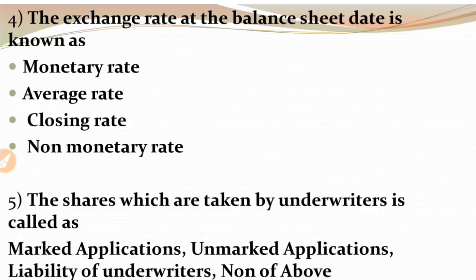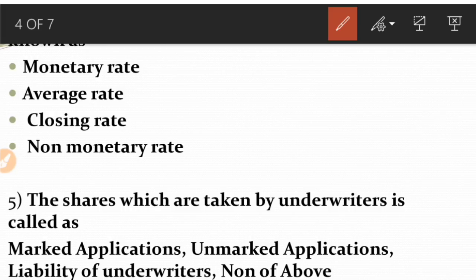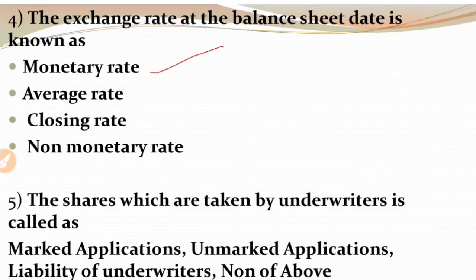MCQ 4: The exchange rate at the balance sheet date is known as - options are monetary rate, average rate, closing rate, or non-monetary rate. The right answer for this question is monetary rate. So the exchange rate at the balance sheet date will be known as monetary rate.